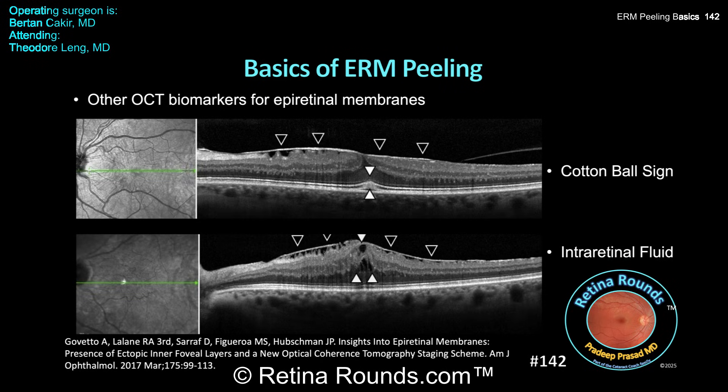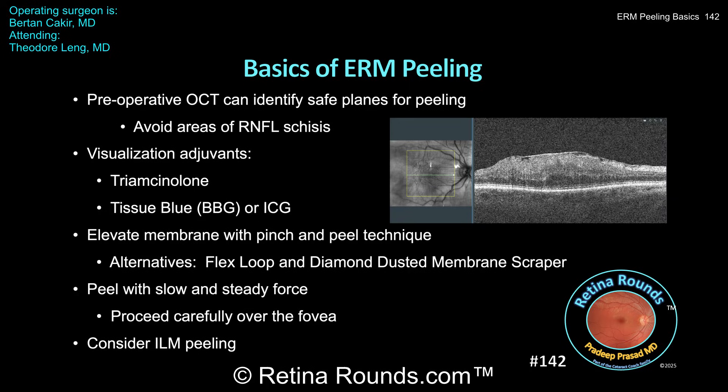Other biomarkers to look out for include the cotton ball sign — a hyperreflective focus in the outer retina at the fovea, shown in the upper image — as well as intraretinal fluid, shown in the bottom image. Both can be associated with worse visual symptoms and may serve as markers to help decide whether to intervene. The OCT can also be helpful for surgical planning: elevations in the ERM on OCT can help the surgeon identify a safe spot to initiate peeling, and areas of RNFL schisis should generally be avoided since initiating a peel there can further exacerbate damage to the nerve fiber layer.